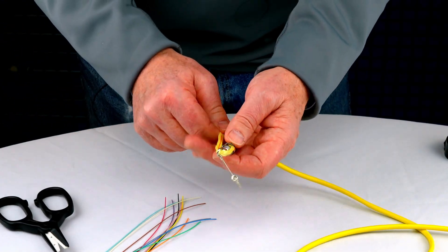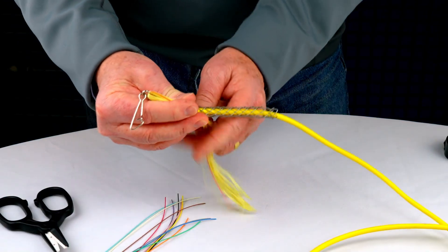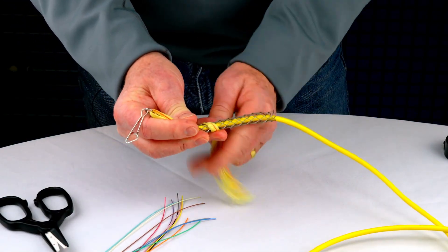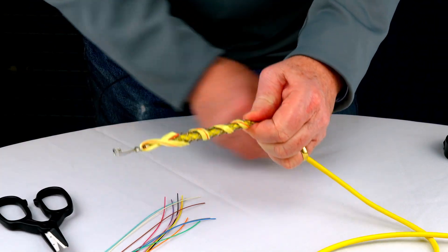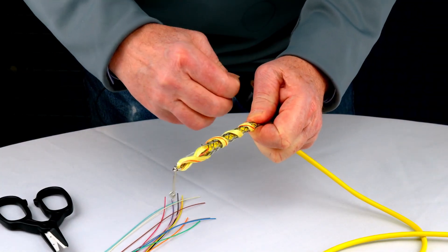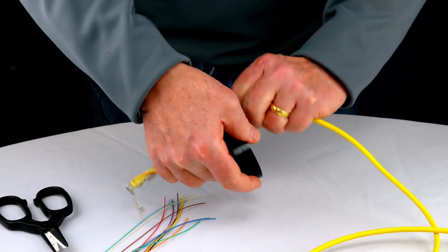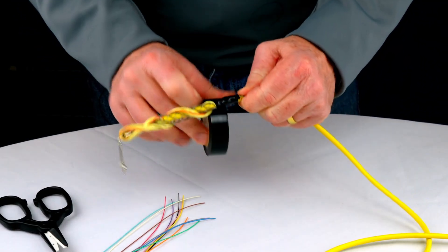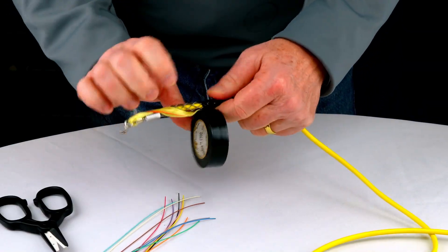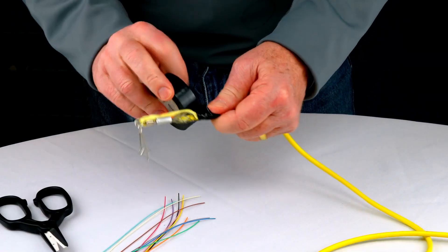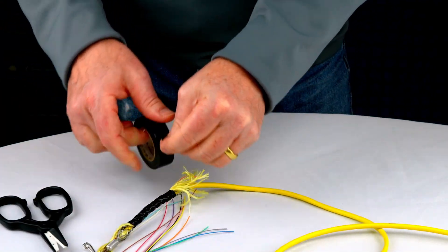Fold it back and wrap it around the wire mesh. Then we'll break out our tape and secure that aramid yarn to both the outside of that grip and tape it down to the jacket.